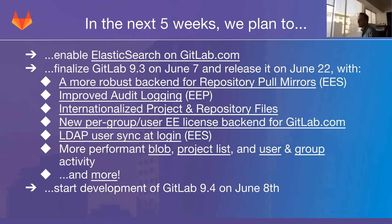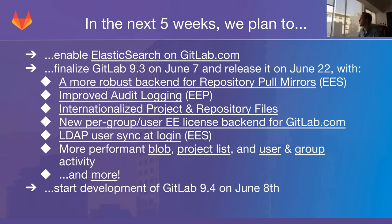The third thing for 9.3 is an internationalized project and repository files page — the second step in the effort to internationalize all of GitLab, being worked on by Bob. We're adding German and Spanish translations. Spanish is one of the most widely spoken languages, and German is included because German strings are notably longer in character count than English, which stresses our UI in interesting ways — making it a great test for layout robustness.